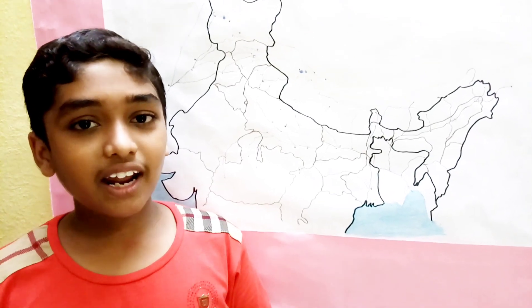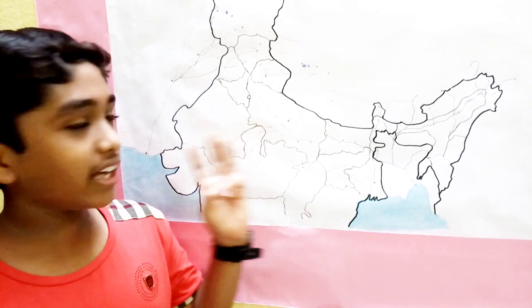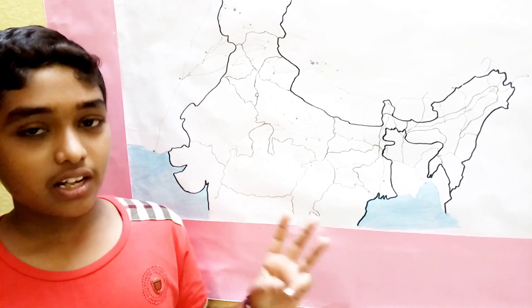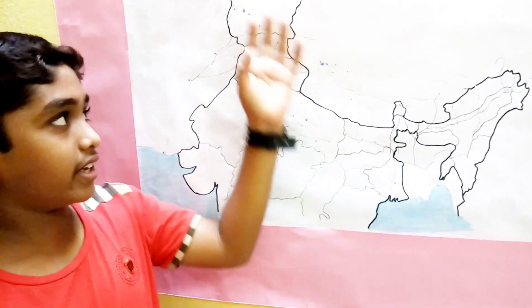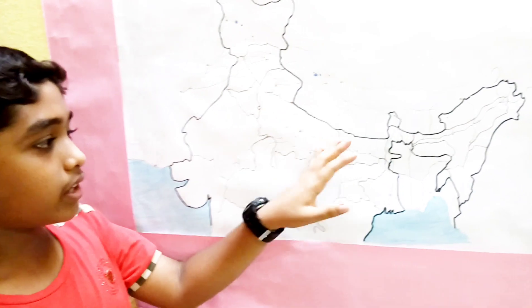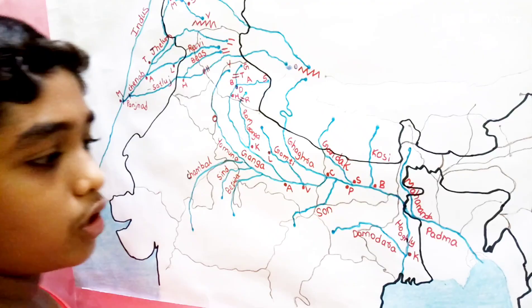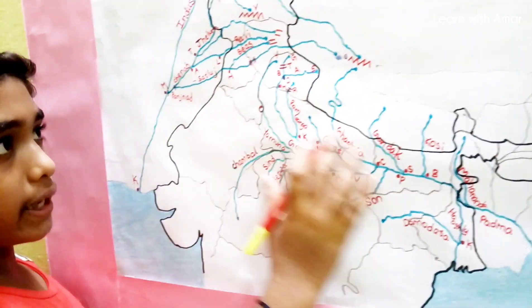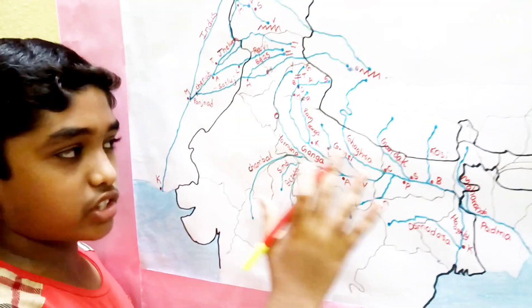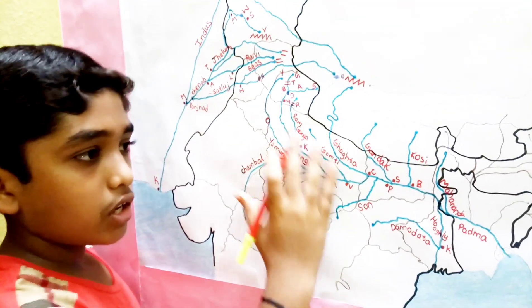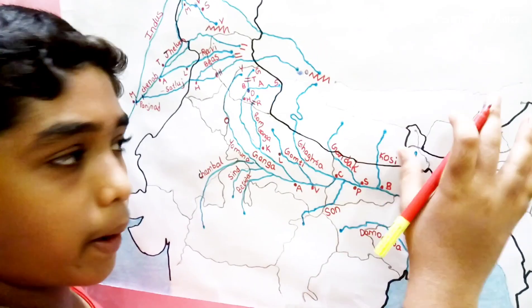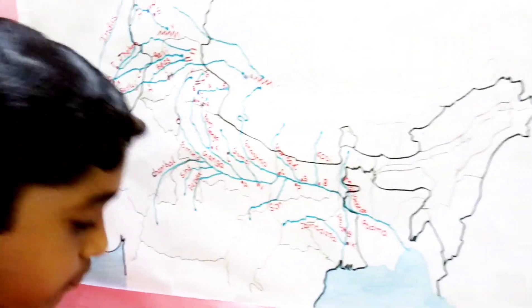As you know, there are mainly three Himalayan rivers. They are the Indus, Ganga, and the Brahmaputra. We have completed the drainage system of Ganga. Now let's go to the Brahmaputra.